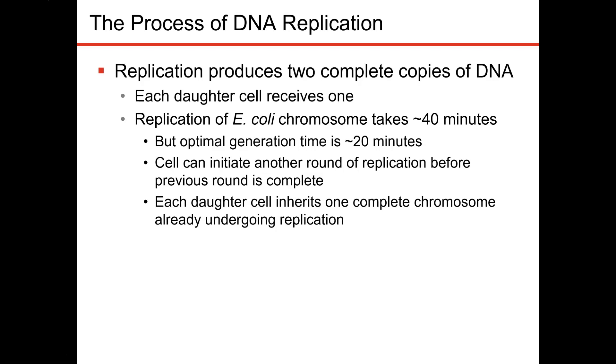For bacteria, for E. coli, replication produces two complete copies of DNA so that each daughter cell can receive one. They have a generation time of about 20 minutes, but it takes E. coli to replicate their DNA about 40 minutes. That would make you confused on how they can replicate DNA before they actually replicate the cells.